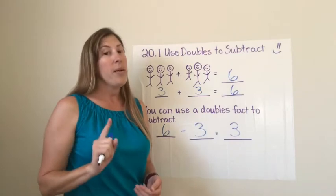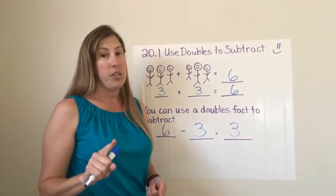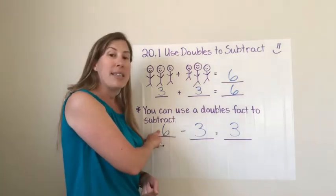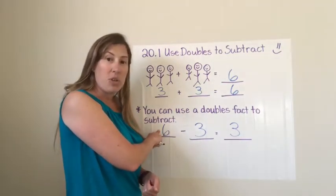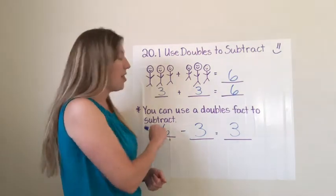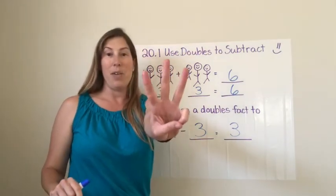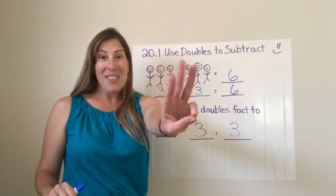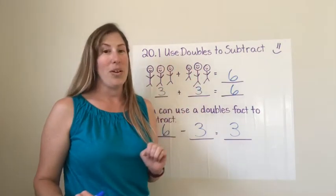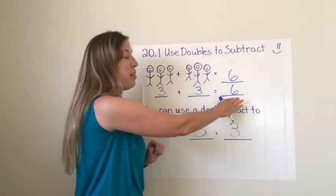And one thing I really want you to know and pay attention to because this is important. The greater number has to start the subtraction sentence. It wouldn't make any sense if I had three take away six because if I have three do I have six to even take away? It won't work. So you have to begin with the greatest number.